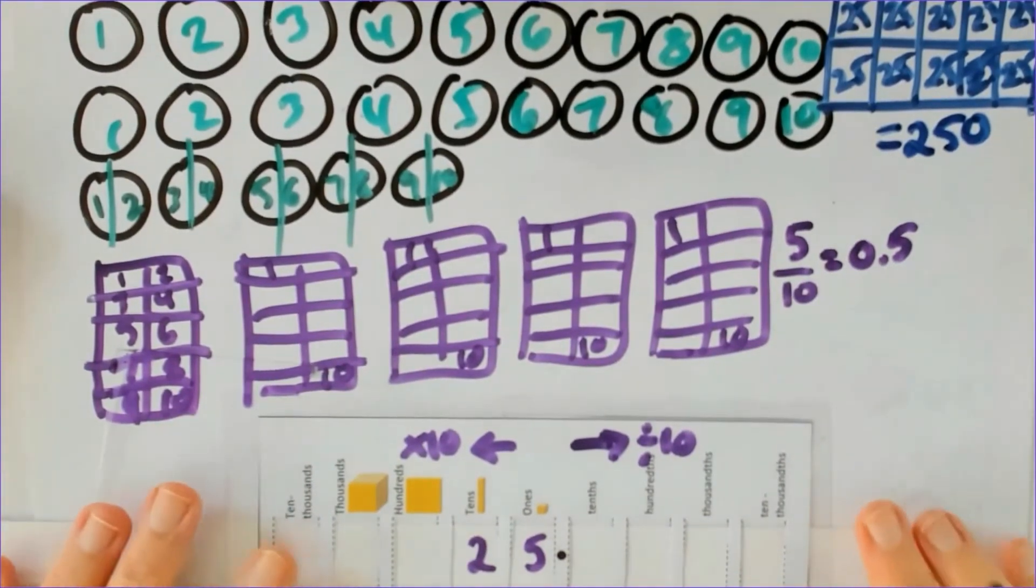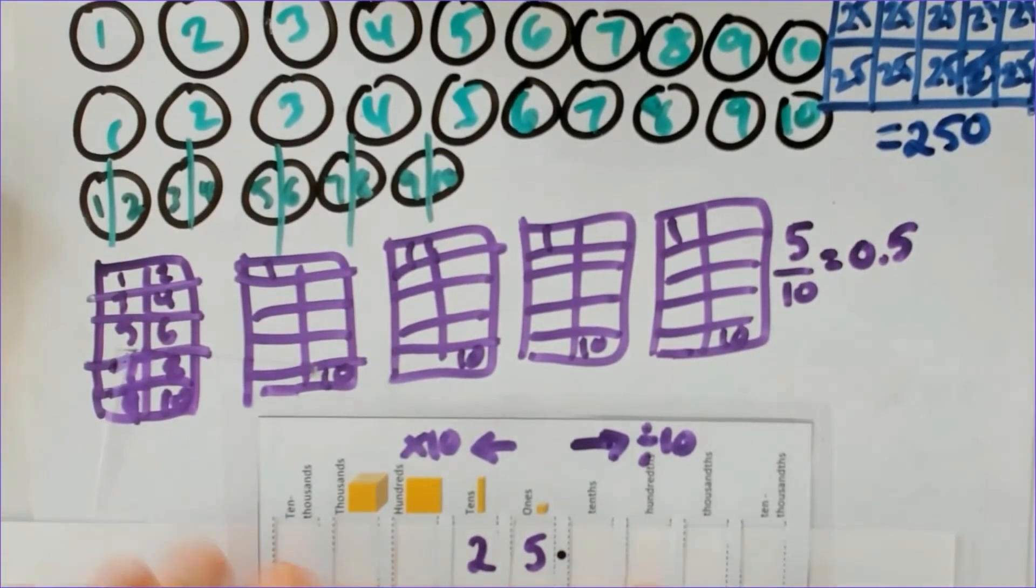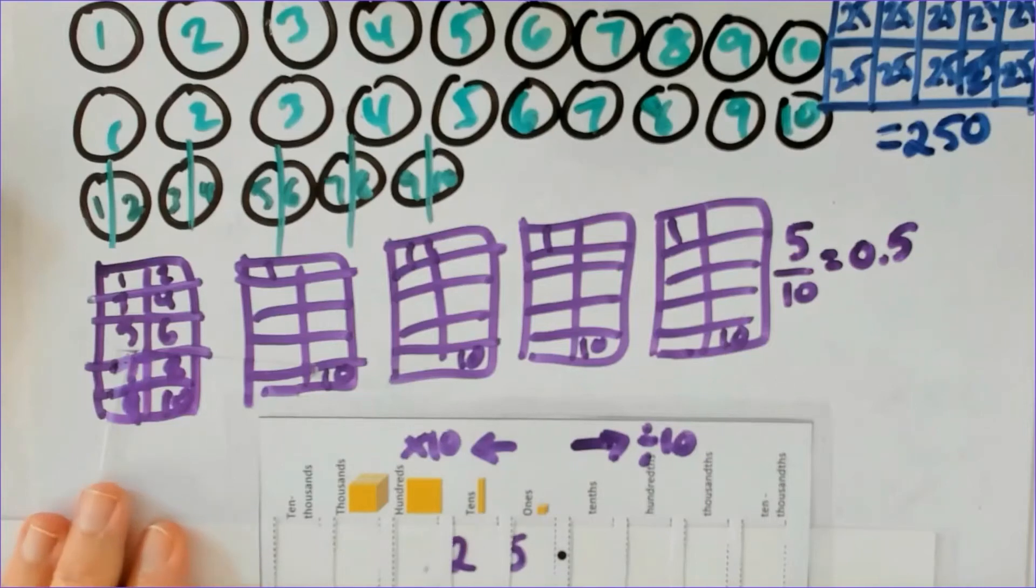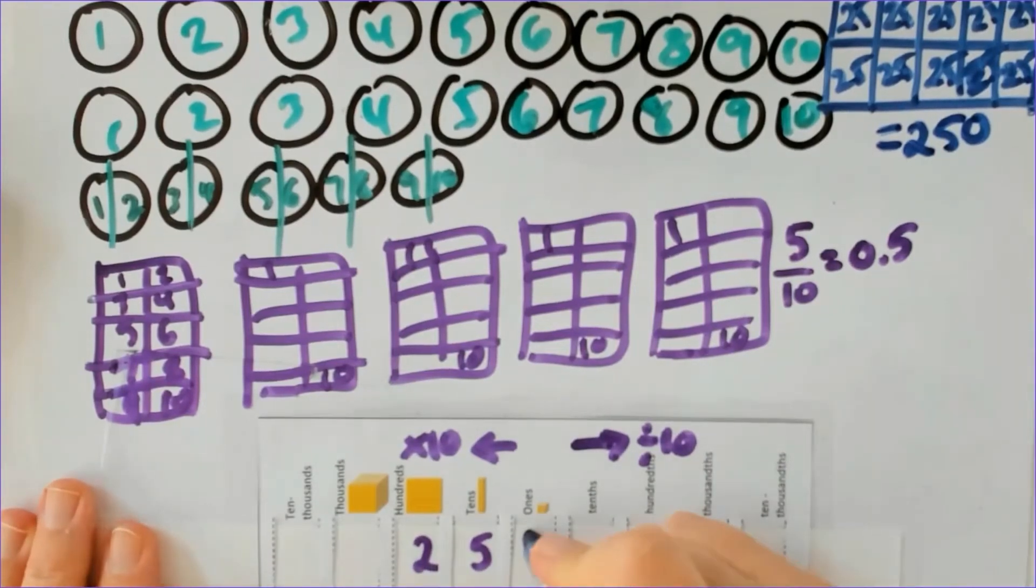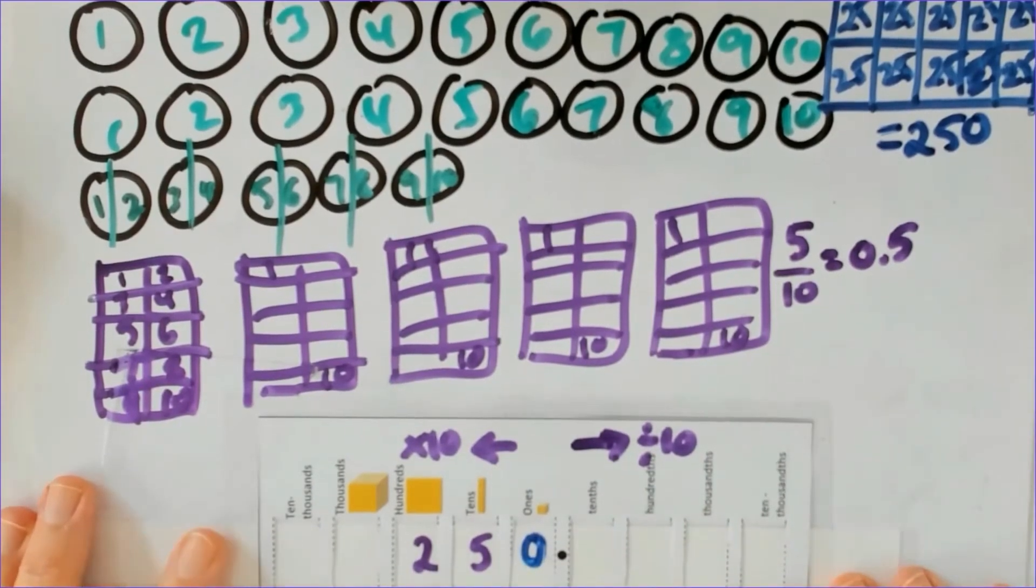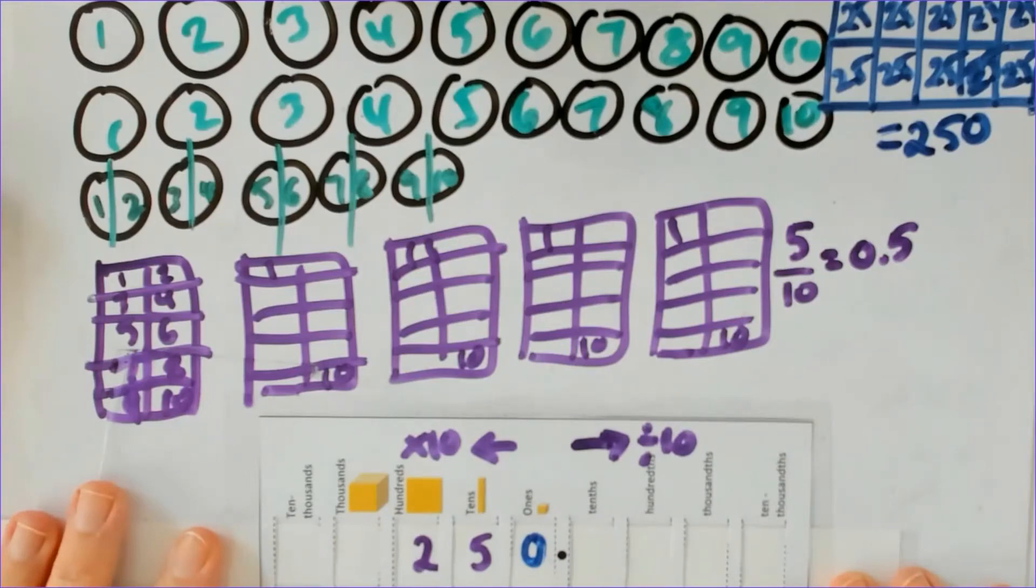So here when I've got 25 and I multiply it by 10 I make it 10 times bigger, that's how I show that, that's what's happening, that is 10 times bigger.